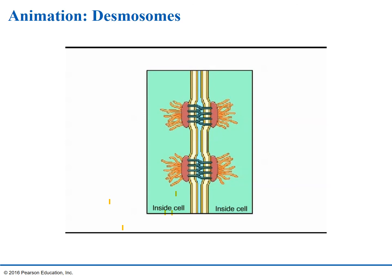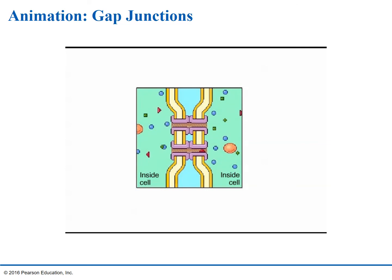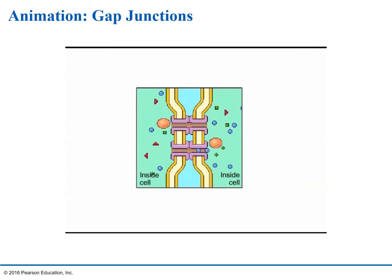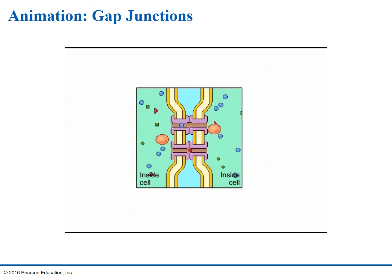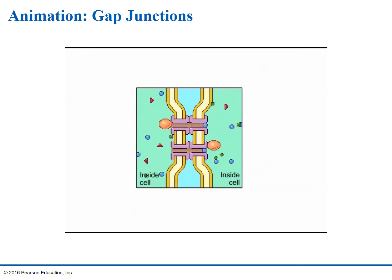Now let's look at gap junctions. In gap junctions, or communicating junctions, two cells are separated by a small gap bridged by specialized channels that allow the passage of water and small molecules. Gap junctions help coordinate the activities of adjacent cells — for example, a hormone that stimulates one cell will often activate adjacent cells as well by the passage of intracellular signals through the gap junction.